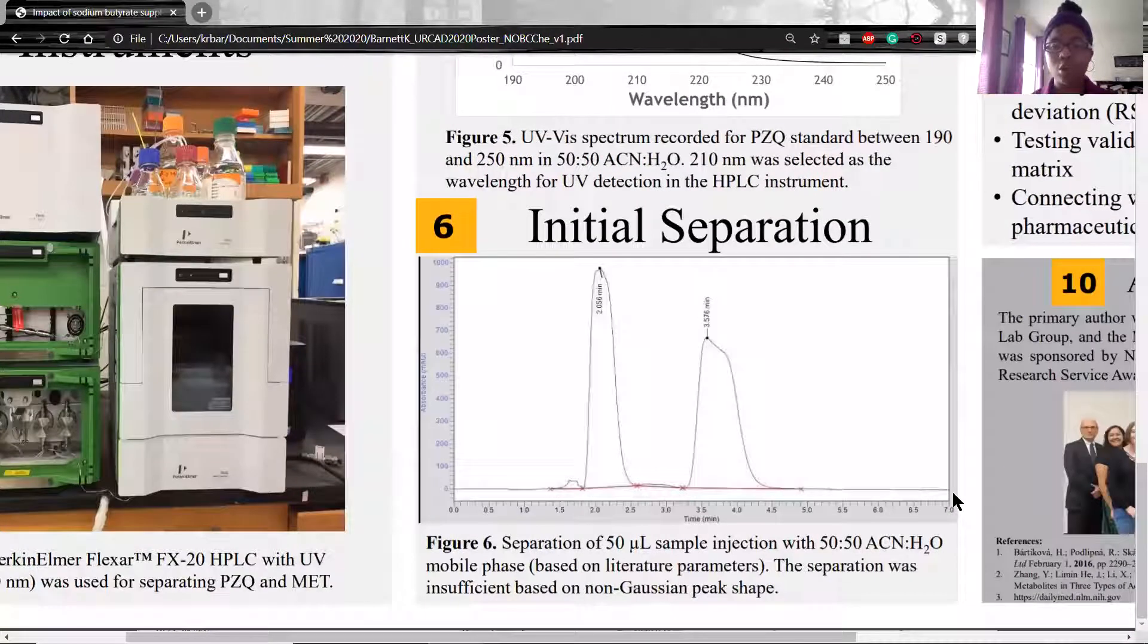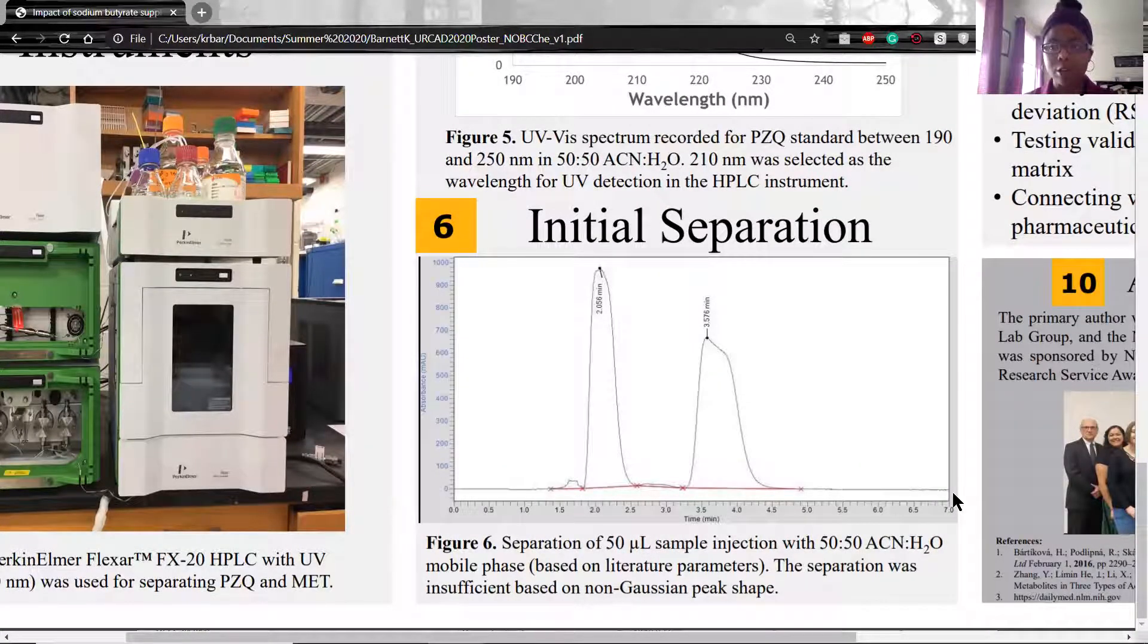In section 6, we get to our first results of this research. In this chromatogram here, we can see that two compounds are identified. However, they're not very quantifiable because they have non-Gaussian peak shapes.